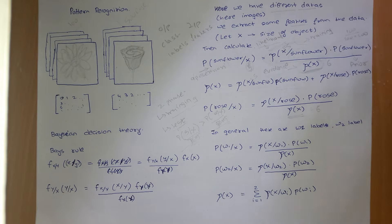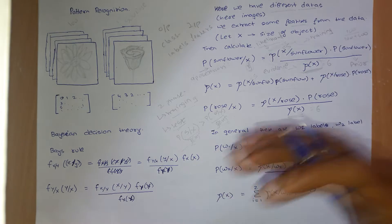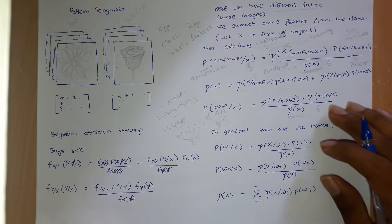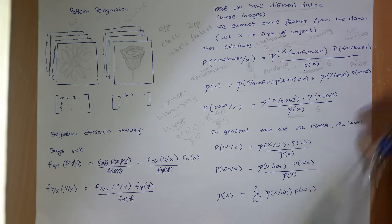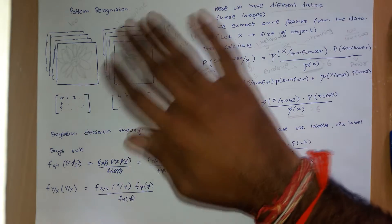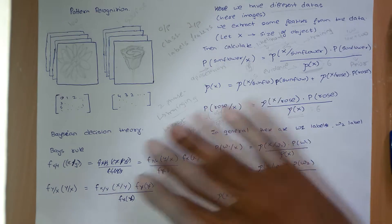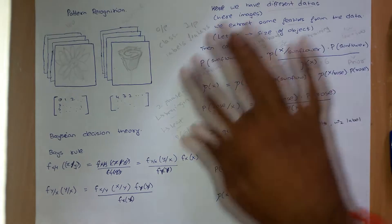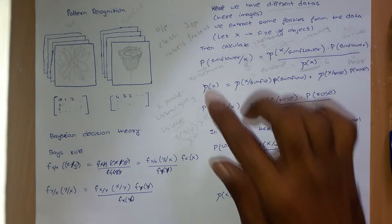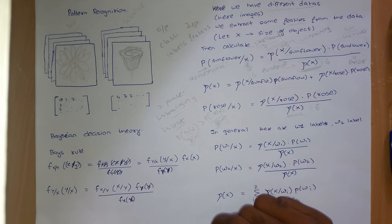Welcome back to the second lecture. Let us first revise what we have done. We started with pattern recognition and the intuition of what pattern recognition was, and then we saw Bayesian decision theory.